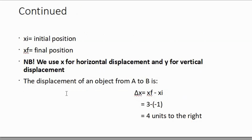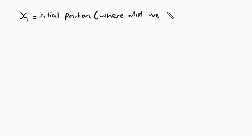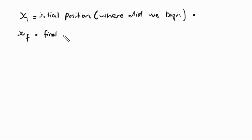XI is our initial position — where did we start, where did we begin? We had to begin at some point. Then XF is our final position — in other words, where did we stop, or where did we end up?